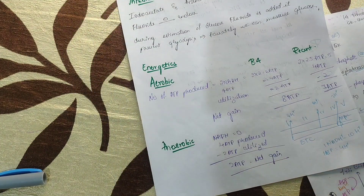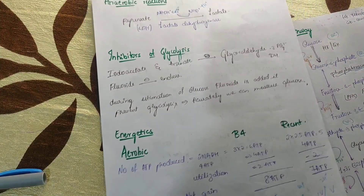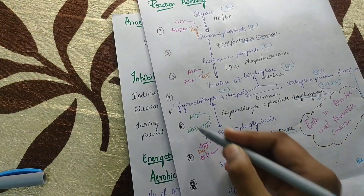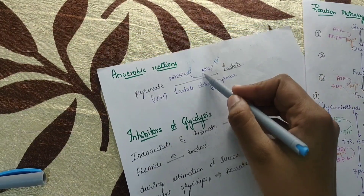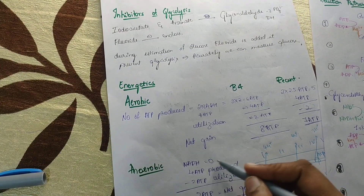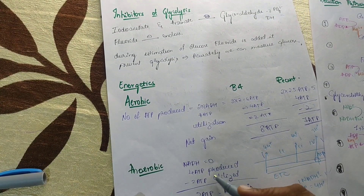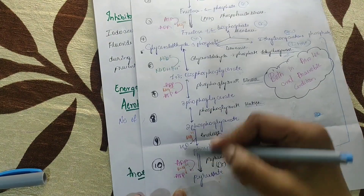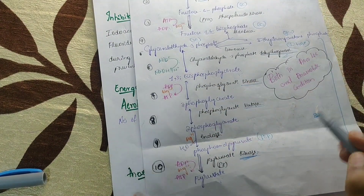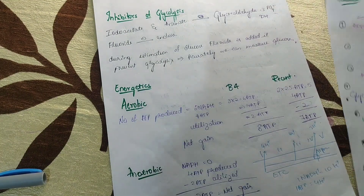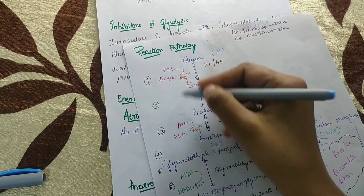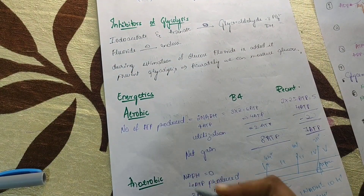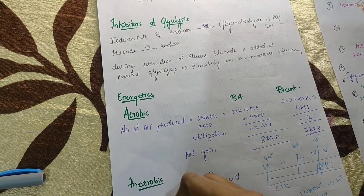In anaerobic condition, NADH is produced during glycolysis, but it is utilized again in the reaction converting pyruvate to lactate, so net NADH produced is 0. ATP directly produced will be 4 (from two rounds of the pathway), and we subtract the 2 ATPs utilized, giving a net gain of 2 ATP in anaerobic condition. So: aerobic = 7 ATP (recent), anaerobic = 2 ATP.